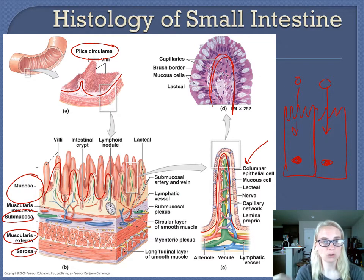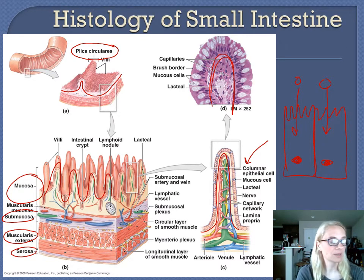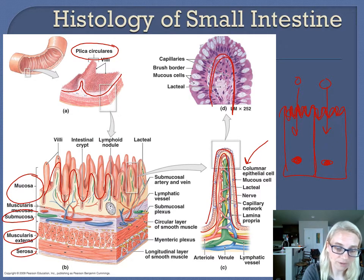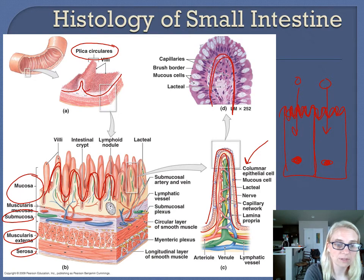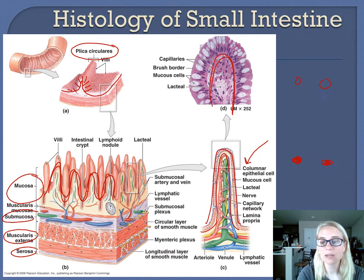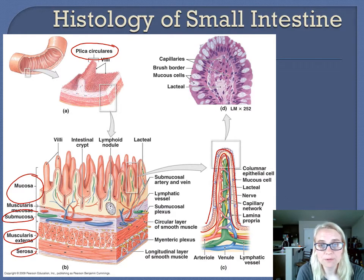If our 20-foot-long small intestine was just a flat tube with no folds, it would give us about three and a half square feet of absorptive area. But because of these folds, it gives us about 2,200 square feet of absorptive surface. Wherever you have microvilli on the villi, and all those villi on all those folds — folds upon folds upon folds — all of those things help to increase that surface area.